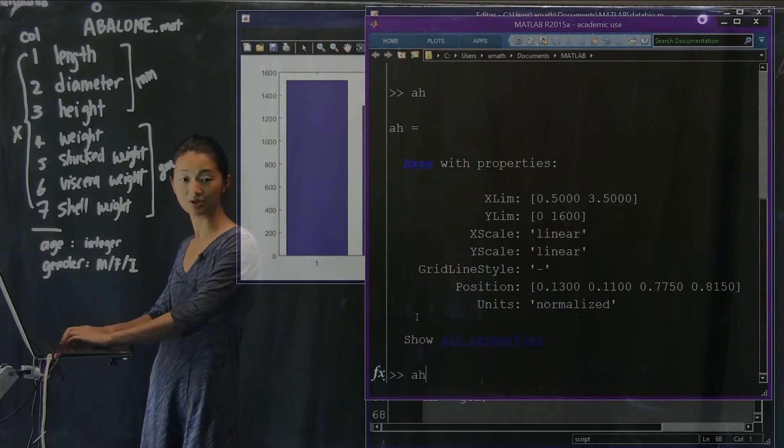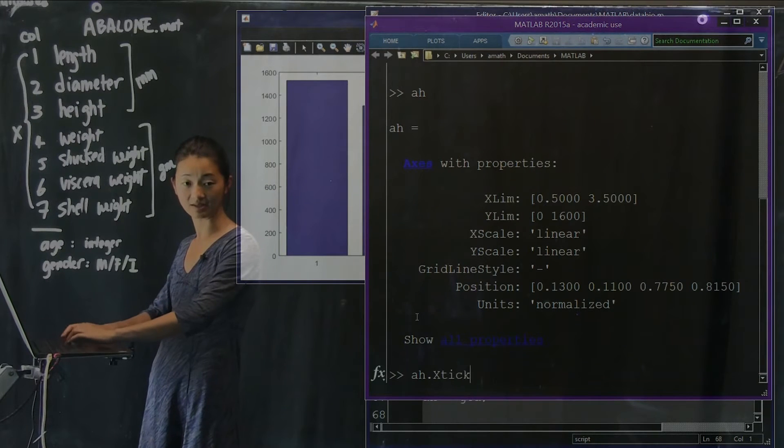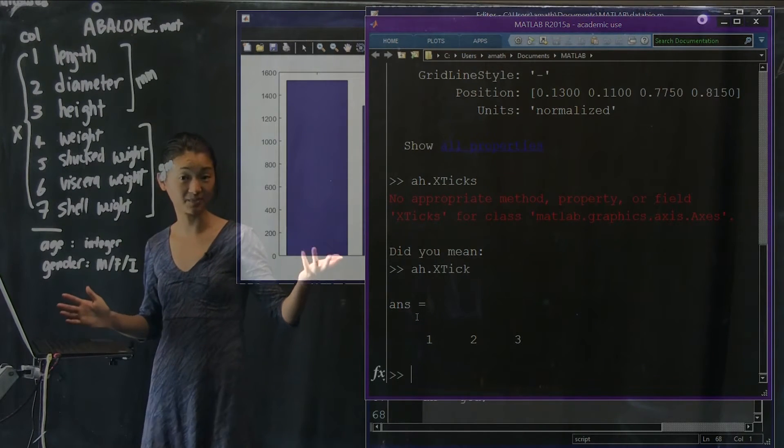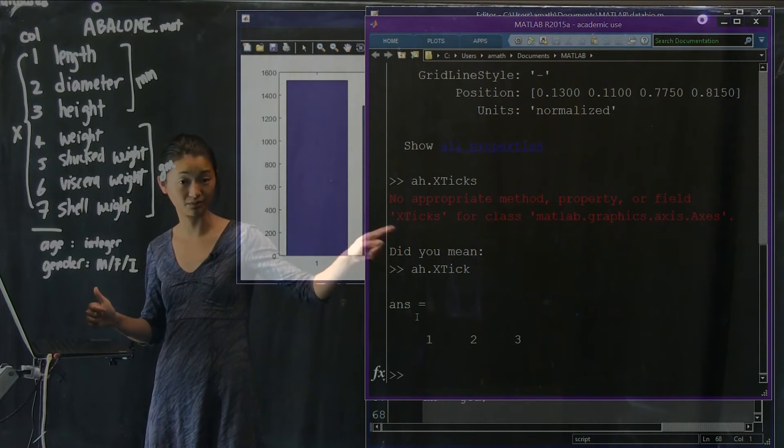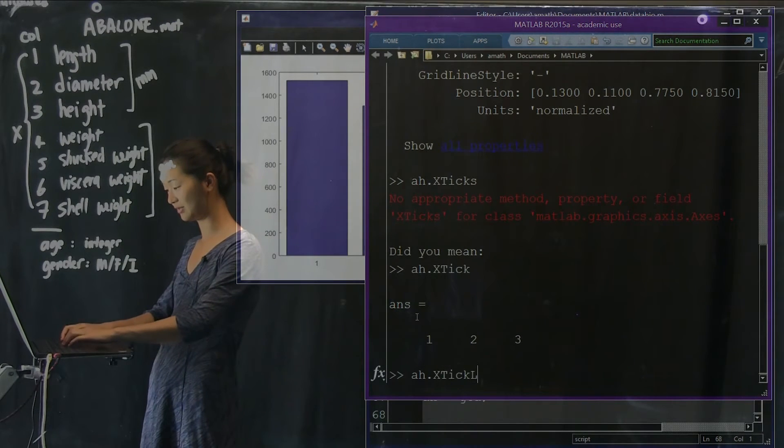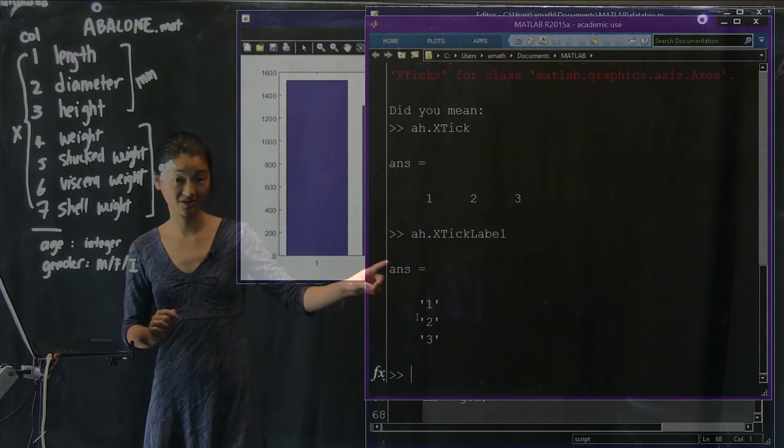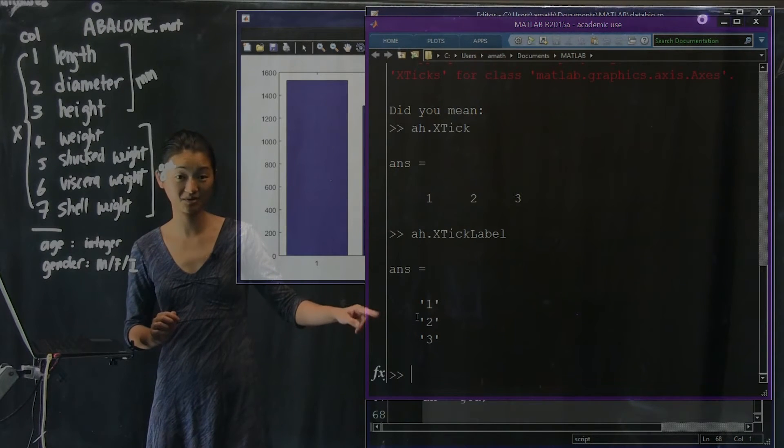So, what we can do is, we say AH.xtick, I think this one's capitalized, xtick. There we go. So, that gives me the position of the ticks, which is one, two, and three. And I can also get xtick label, which are the characters one, two, and three. So, that gives you a clue how to change it.